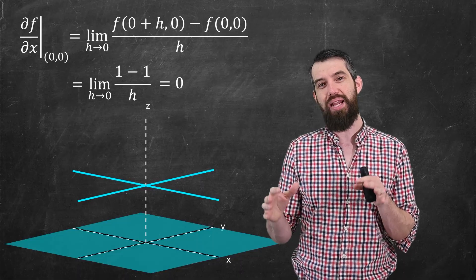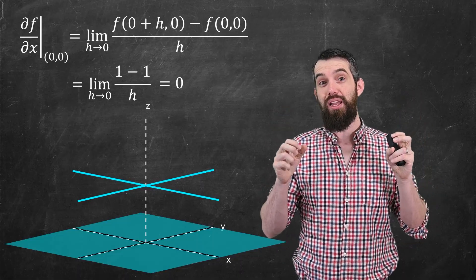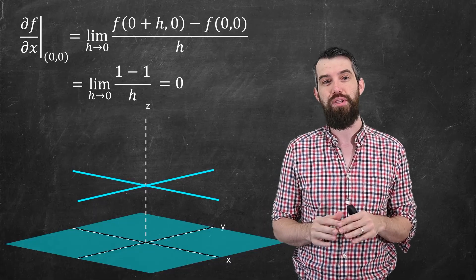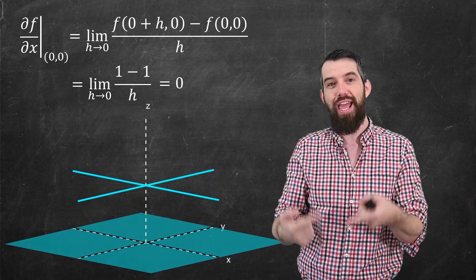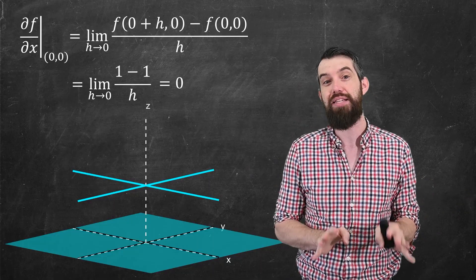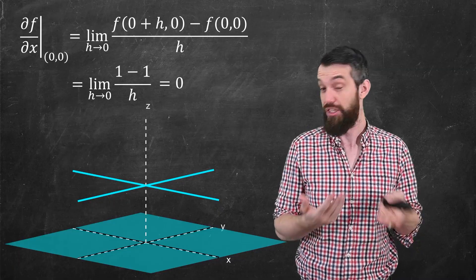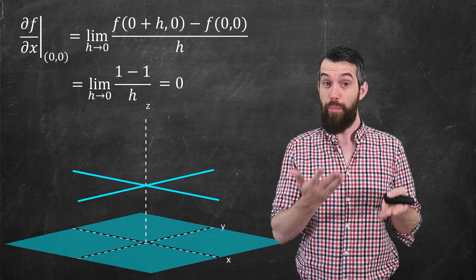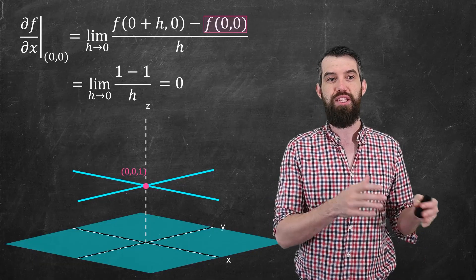And one of the ways that I think about this is what does a partial derivative see? Well, it fixes that value of y equal to 0, and then it imagines the x value is changing. It's only looking as you change the x value. It's only looking down the x-axis. But then the function down the x-axis is really nice. It's just a constant 1. And so the partial derivative for what it can see doesn't see any problems.